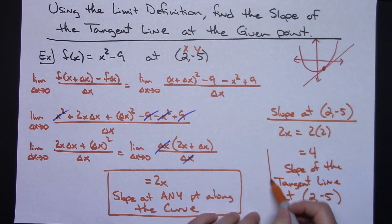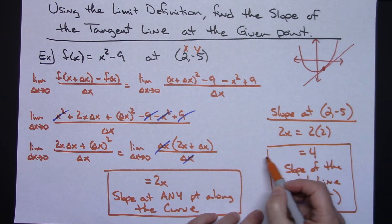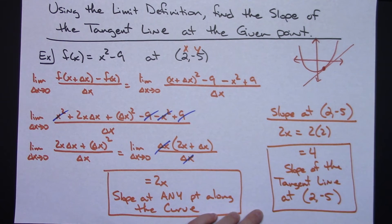So to answer the question, what is the slope of the tangent line at the given point? It's 4. This is the slope of the tangent line at any given point along the curve. Specifically at the point 2 negative 5, it's 4.